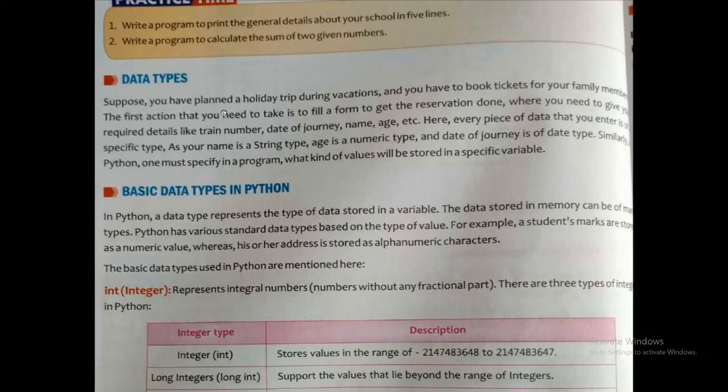Suppose you have planned a holiday trip during vacation and you have to book tickets for your family members. The first action that you need to take is to fill a form to get the reservation done where you need to give required details like train number, date of journey, name, age, etc. Here every piece of data you enter is of a specific type. As your name is a string type, age is a numeric type, the date of journey is a date type. Similarly, Python, one must specify in a program what kind of values will be stored in a specific variable.